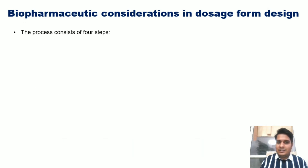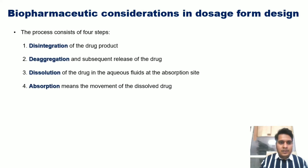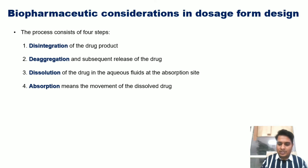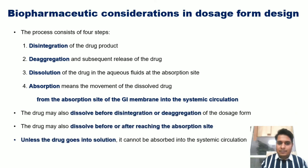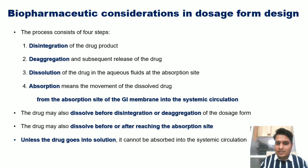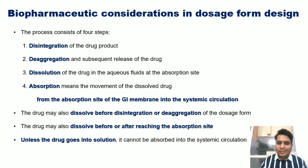The process consists of four steps: disintegration, de-aggregation, dissolution, and absorption — from the absorption site of the gastrointestinal membrane into the systemic circulation. The drug may also dissolve before disintegration or de-aggregation of the dosage form, or before or after reaching the absorption site. Unless the drug goes into solution form, it will not be absorbed into the systemic circulation.